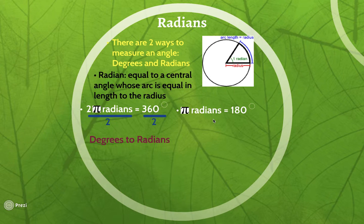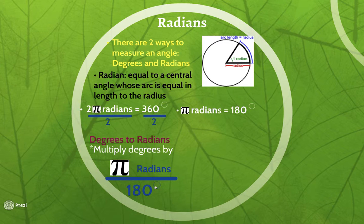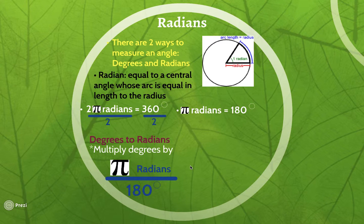When converting from degrees to radians, we multiply the degrees by pi radians over 180 degrees. Since degrees is in the denominator, the degrees cancel out and we're left with radians — because for every pi radians there are 180 degrees. It's just like unit conversion: if you're given feet and want to convert to inches, you multiply by 12 inches over one foot to cancel the feet out. So to convert degrees to radians, multiply by pi radians over 180 degrees.